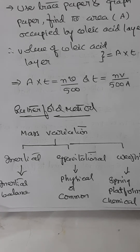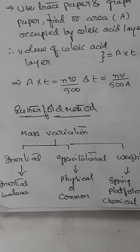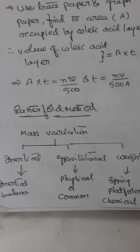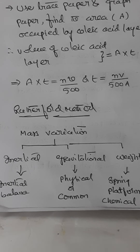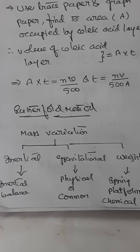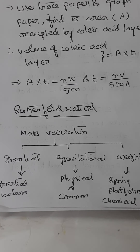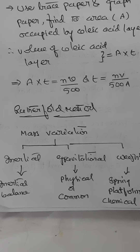Let us look at the range of variation of mass. Masses are basically of two types: inertial mass and gravitational mass. Inertial mass of a body is measured using an inertial balance. Gravitational mass is measured using a physical balance or a common balance. To measure the weight of a body, we use a spring balance, platform balance, or chemical balance.